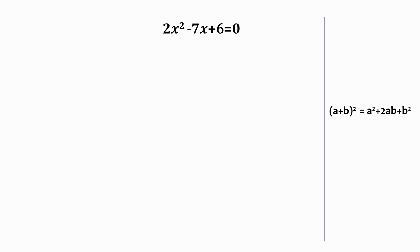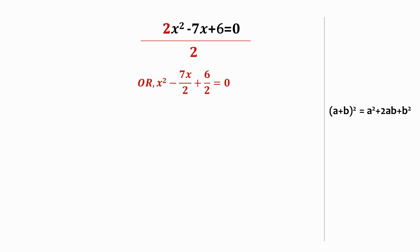Here, the coefficient of x² is 2. So what we need to do to get the coefficient of x² to be 1 is we need to divide the entire equation by 2. And that will give us x² - 7/2 x + 6/2 = 0. Now we know 6/2 can be reduced to 3, so we write the equation as x² - 7/2 x + 3 = 0.